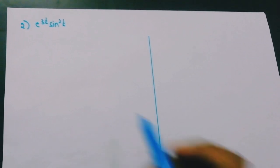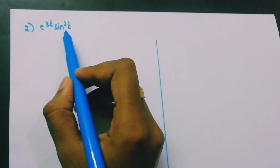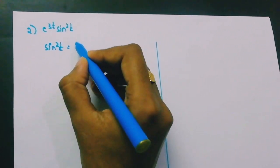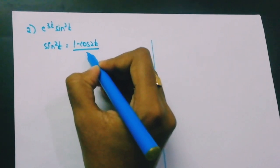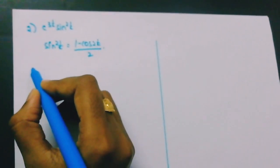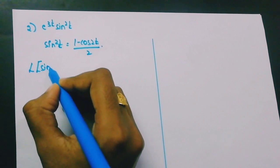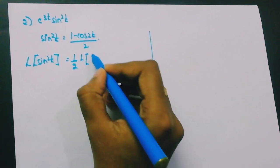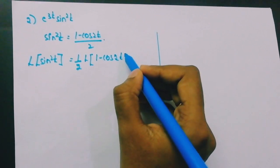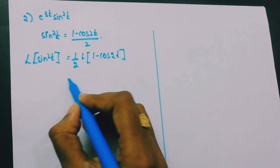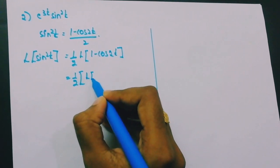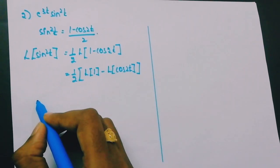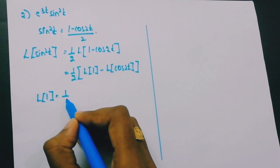Coming to the second problem: L{e^(3t)·sin²(t)}. First we need to find L{sin²(t)}. Using the trigonometric identity, sin²(t) = (1−cos(2t))/2. So we need L{(1−cos(2t))/2}, which equals (1/2)[L{1} − L{cos(2t)}].